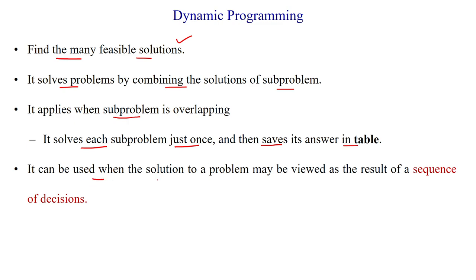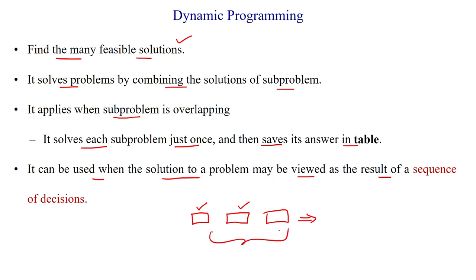Dynamic programming can be used when the solution to a problem may be viewed as a result of a sequence of decisions. It finds feasible solutions through a sequence of decisions — the first decision is taken as a feasible solution, the second decision is taken as a feasible solution, and so on. It uses a sequence of decisions with many feasible solutions, and finally finds the optimal solution among these feasible solutions.